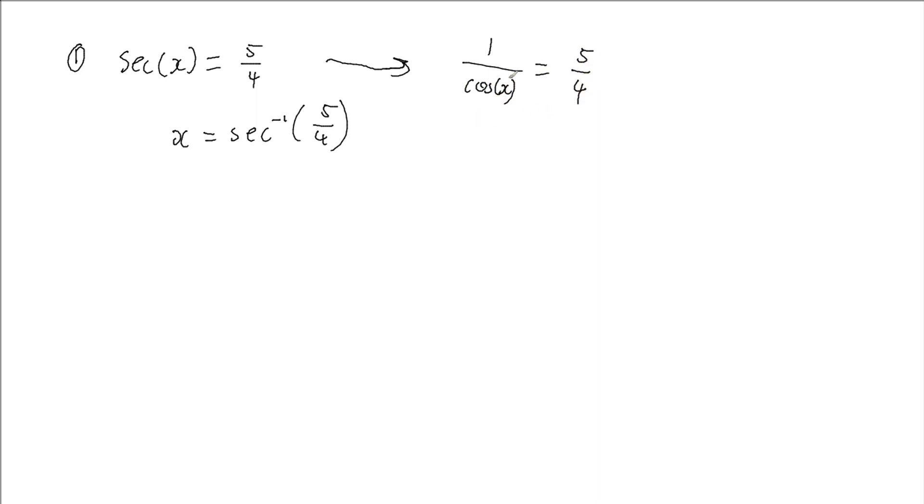And if we think about it like this, if I can isolate the cos x, I can then get the inverse of cos. And to do this, because I've got a fraction on the left and a fraction on the right, I can swap both of my fractions, I can take the reciprocal of both of my fractions, and get the cos of x is equal to 4 fifths.